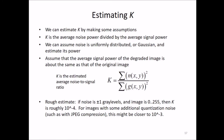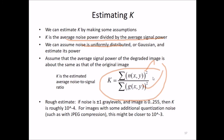To estimate k, we assume k is the average noise power divided by the average signal power. We can assume noise is uniformly distributed or Gaussian and estimate its power, assuming the average signal power of the degraded image is about the same as the original. A rough estimate: if noise is of gray level ±1 and the image ranges from 0 to 255, then k is roughly 10⁻⁴. For images with additional quantization noise, such as JPEG compression, k might be closer to 10⁻³.